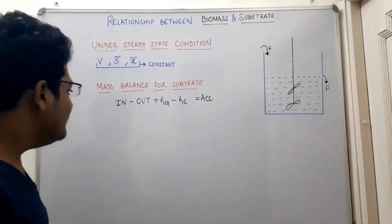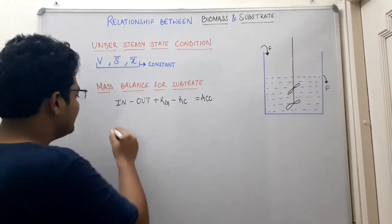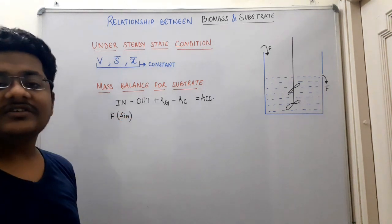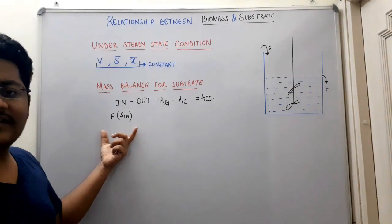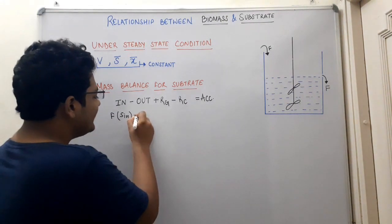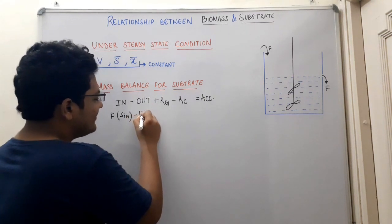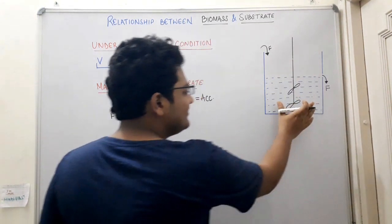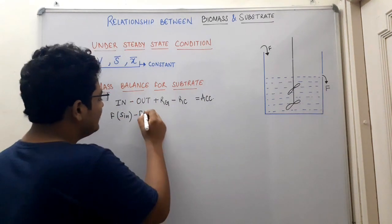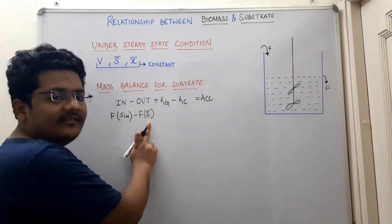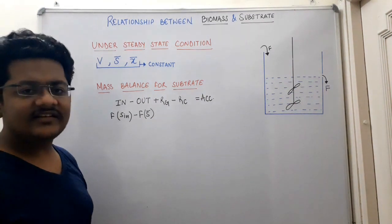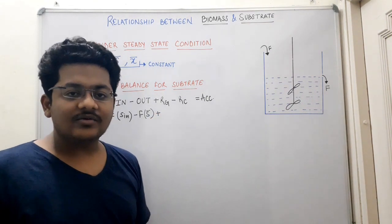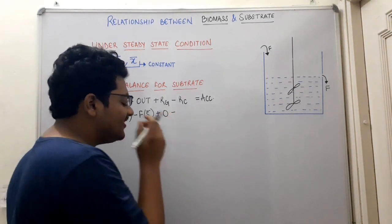The rate at which substrate is flowing in equals F (flow rate) multiplied by the substrate concentration inside the flow — this depicts the inflow rate. Minus the outflow rate: F multiplied by the steady state substrate concentration S, since whatever is in the homogeneous mixture flows out. The rate of generation is zero, because there is no substrate generated inside the bioreactor.